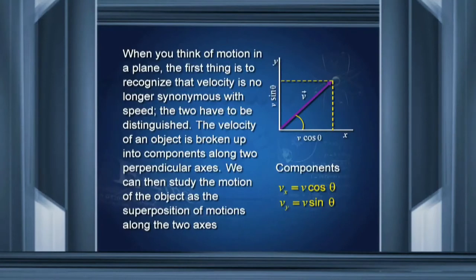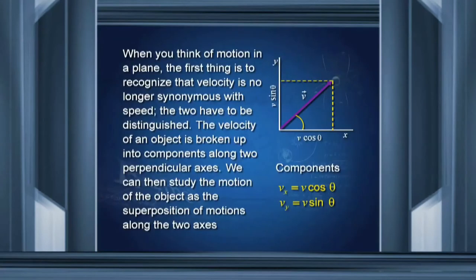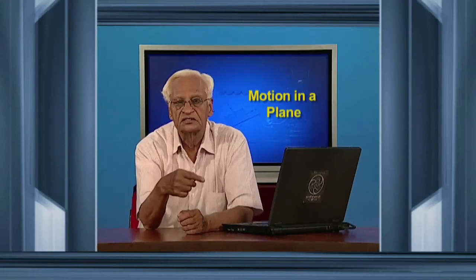In a plane, what we do is we take velocity in whatever direction it is and break it up into two components — one along the x-axis and the other along the perpendicular y-axis. The components are v_x equal to v cos theta and v_y equal to v sin theta. We study the motion along these two components independently and then superimpose to find out the actual motion of the body.